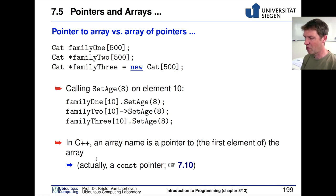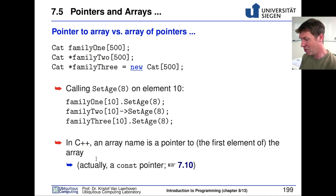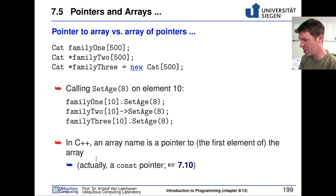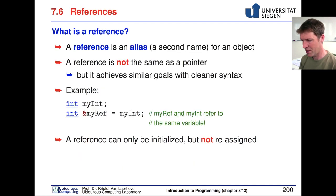In C++, an array is basically a pointer to the entire structure, and since the array starts with the first element, it is also immediately a pointer to the first element of that structure. We'll see a little bit more about this when we look at const pointers.